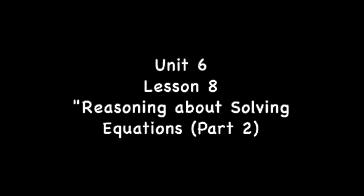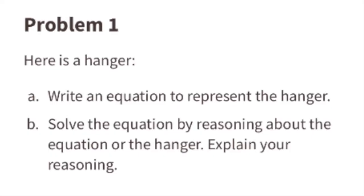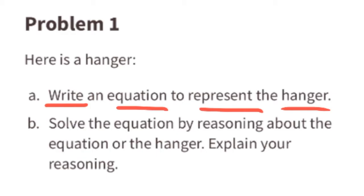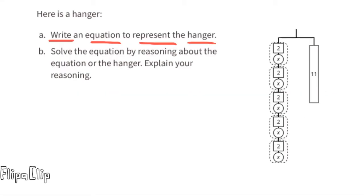Seventh grade Open Up Resources Illustrative Mathematics, Unit 6, Lesson 8: Reasoning About Solving Equations, Part 2. Problem number one. Here is a hanger. Part a: Write an equation to represent the hanger. Look closely at the left-hand side of the hanger. You can see a pattern: 2 plus x five different times, so you can write this as 5 times (2 + x). Look at the right-hand side of the hanger—it's a bar that says 11. That means 5(2 + x) = 11.